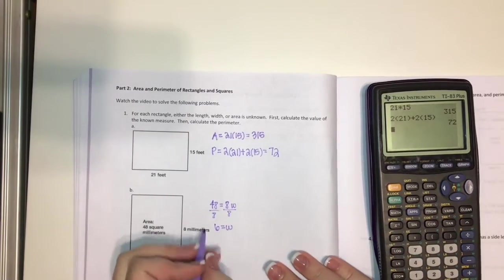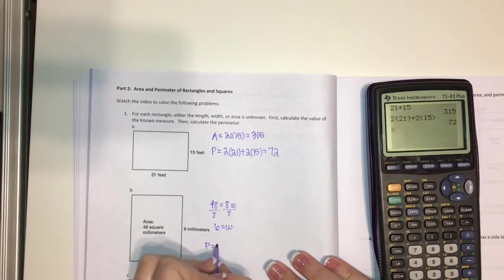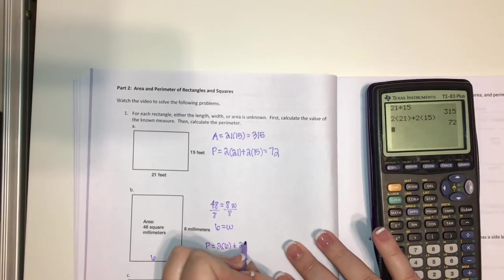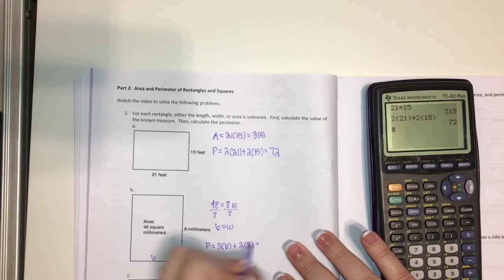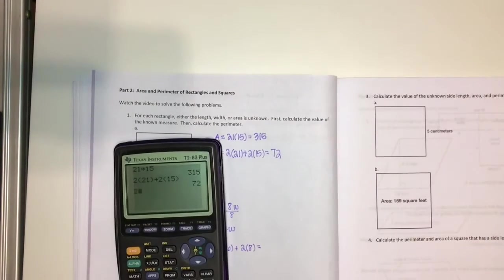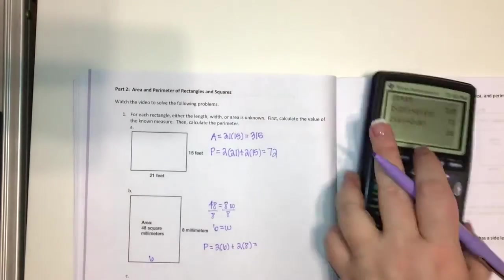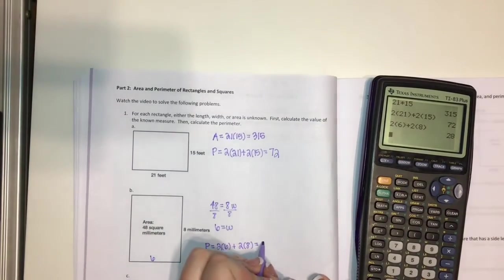Now we need to find the perimeter. So remember the perimeter again, it's going to be 2 times 6 plus 2 times 8. So 2 times 6 plus 2 times 8. And that gives me a perimeter of 20.